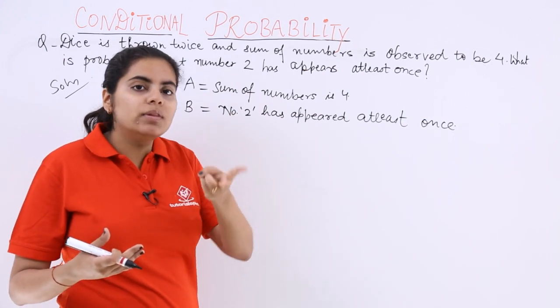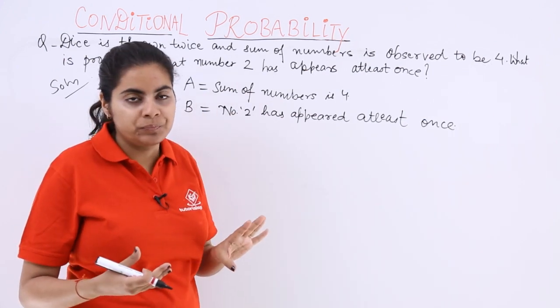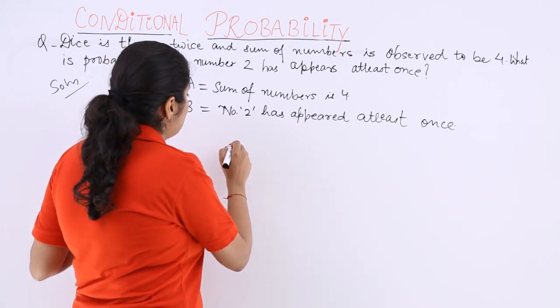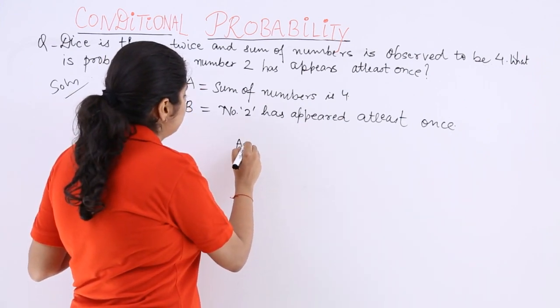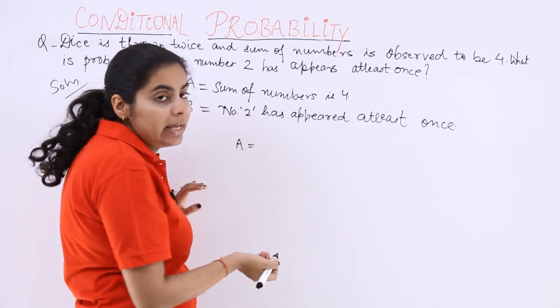Since there are two dice, on both the dice you can get two. Now let's see what are the cases which can come in the event A.